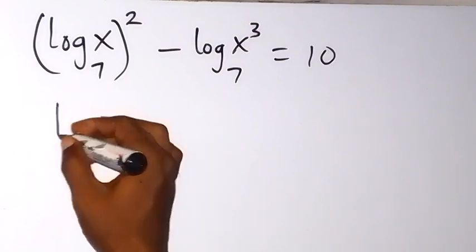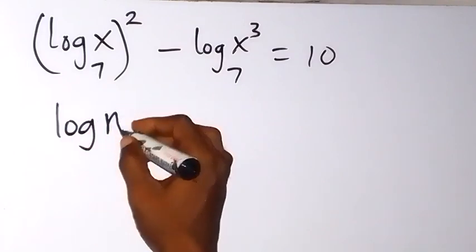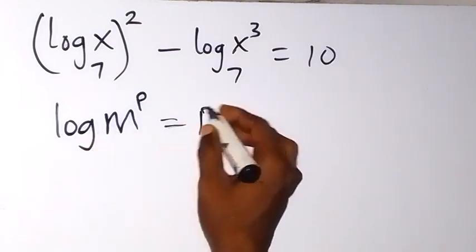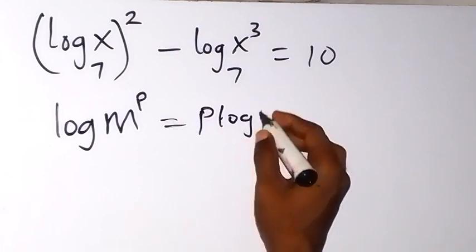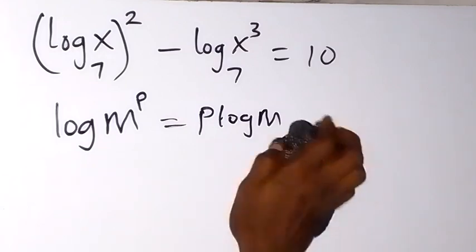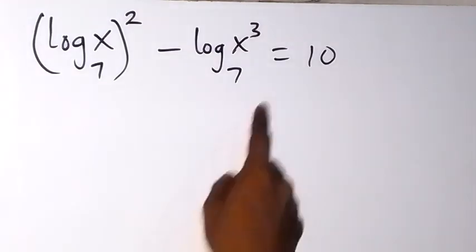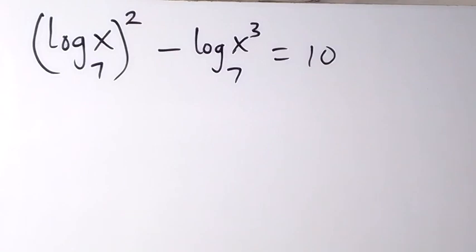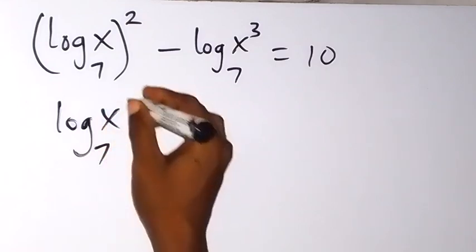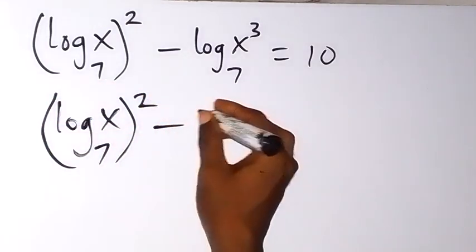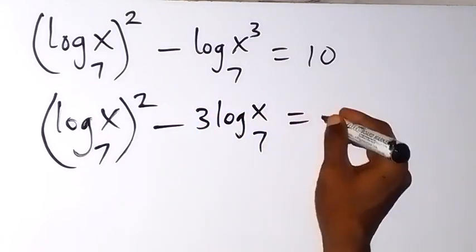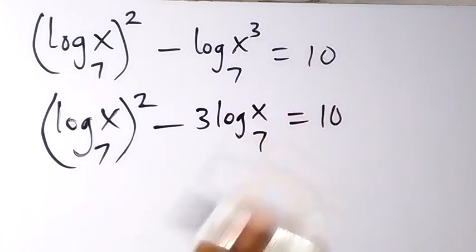Applying the power law of logarithms, which states that log(m) raised to power p equals p·log(m), this power of p can come to the front. When we apply that here, we have x raised to power 3, so we can write this as: log(x base 7) all squared minus 3·log(x base 7) equals 10. So this 3 has come to the back here.